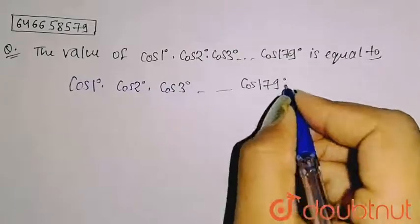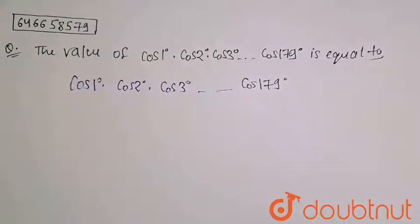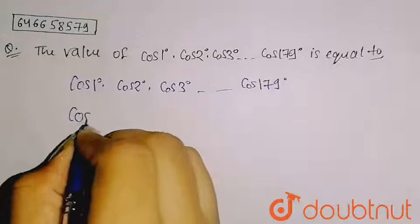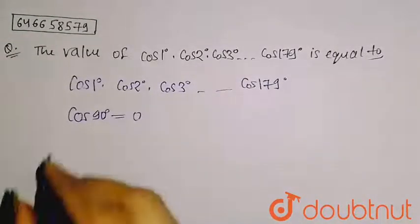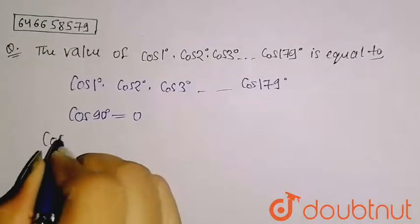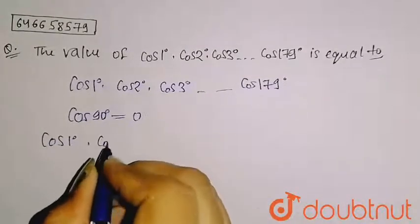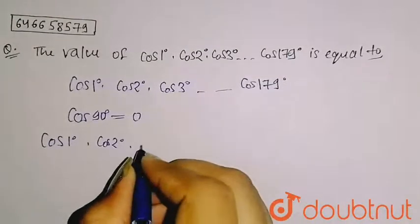We have to find its value. Now basically we know that cos 90° = 0. In this case, if I write like this: cos 1° · cos 2° · cos 3° ... somewhere cos 90° will come, and